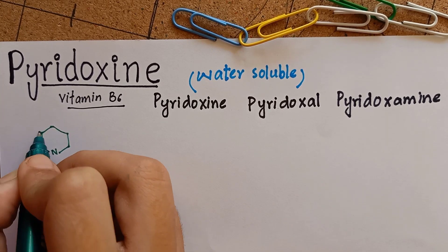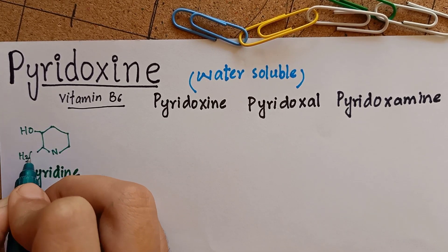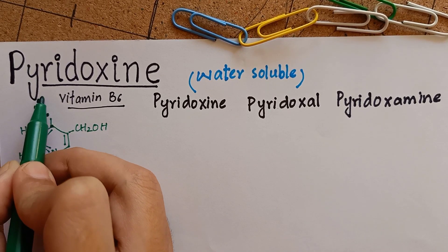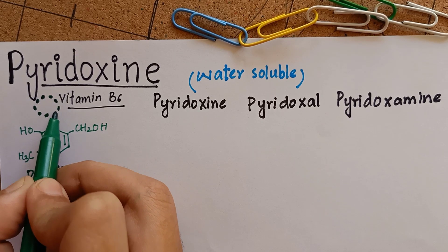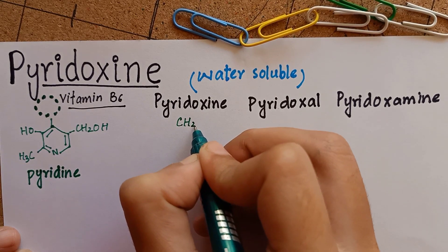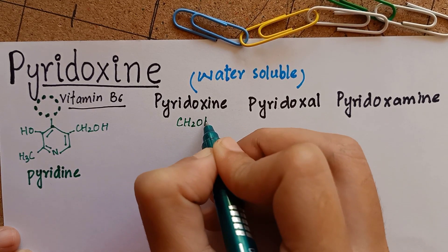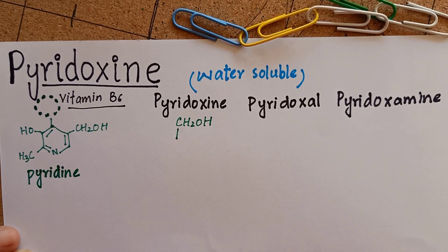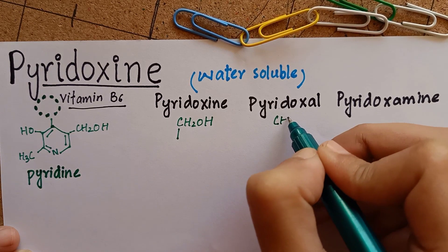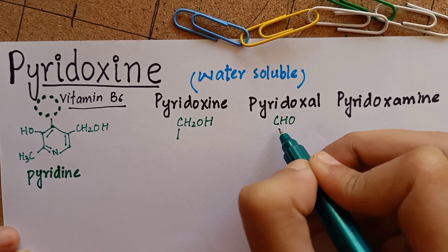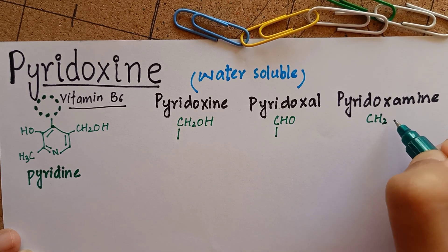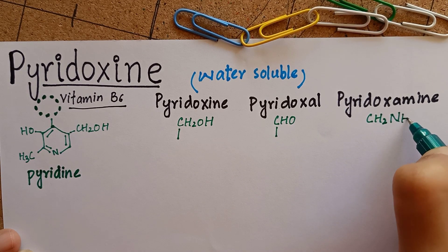Structurally, vitamin B6 consists of a pyridine ring. Depending upon the structure of the functional group attached, it can be a primary alcohol, i.e., pyridoxine, or an aldehyde, i.e., pyridoxal, or an amine, i.e., pyridoxamine.